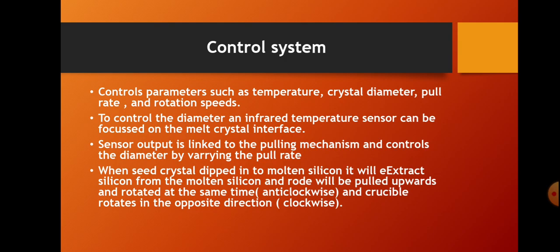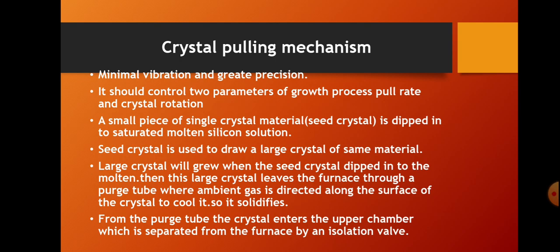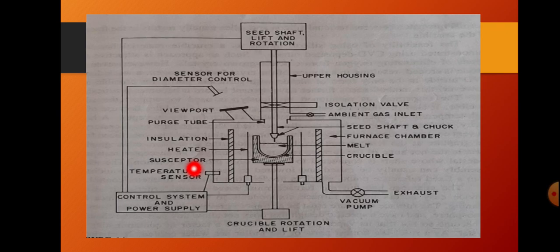The control system controls parameters such as temperature, crystal diameter, pull rate, and rotation speeds. To control the diameter, an infrared temperature sensor can be focused on the melt-crystal interface. The sensor output is linked to the pulling mechanism and controls the diameter by varying the pull rate. When the seed crystal is dipped into the molten silicon, it extracts silicon and is pulled upwards while rotating in the anti-clockwise direction. At the same time, the crucible rotates in the opposite direction.